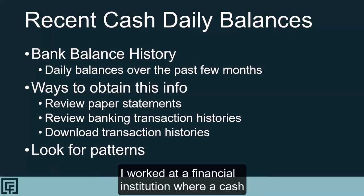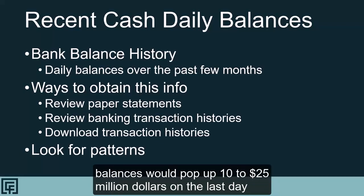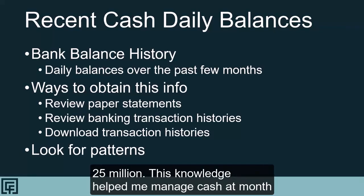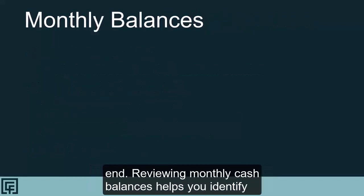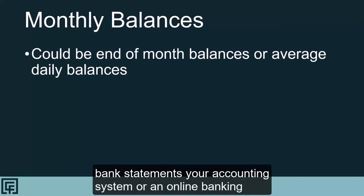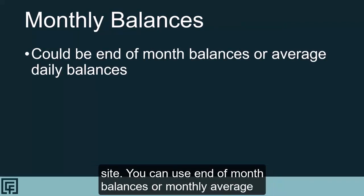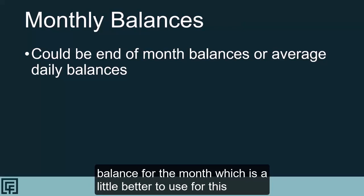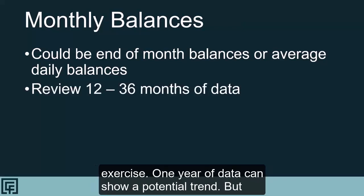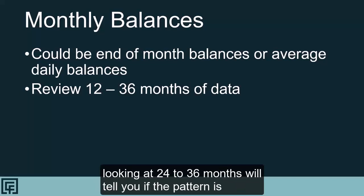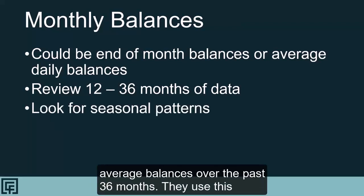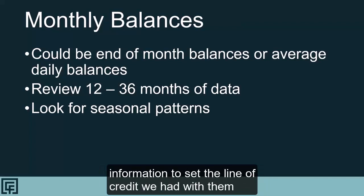Reviewing monthly cash balances helps you identify seasonal trends and the size of those trends. You can look at bank statements, your accounting system, or an online banking site, using end-of-month or monthly average balances. Many business bank statements show an average balance for the month, which is a little better to use for this exercise. One year of data can show a potential trend, but looking at 24 to 36 months will tell you if the pattern is consistent year after year. When I worked at banks, I would submit a worksheet to the Federal Reserve of our monthly average balances over the past 36 months, and they used this information to set the line of credit we had with them.